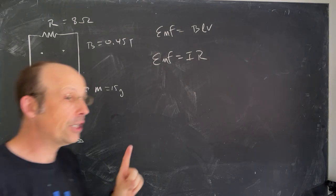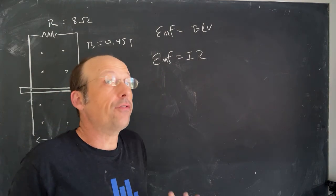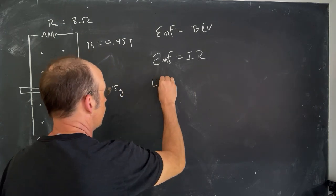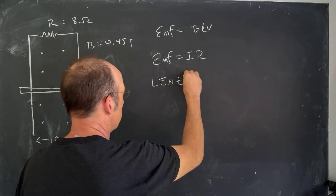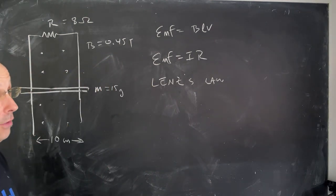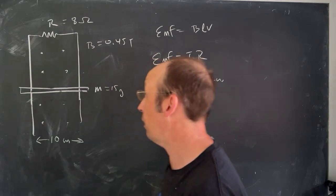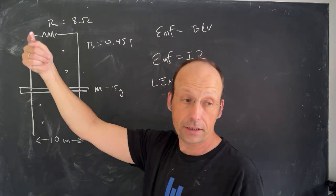Now, the first question, what direction will that current be? Well, we have to use Lenz's law. This says that the direction of the induced current will make a magnetic field, and that magnetic field will oppose the change in flux.